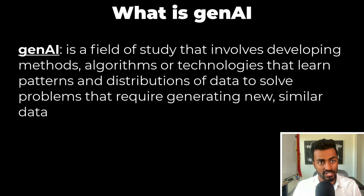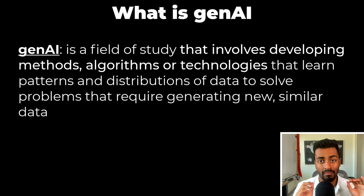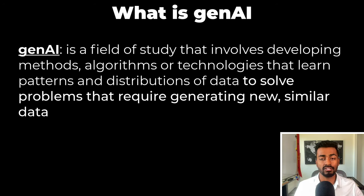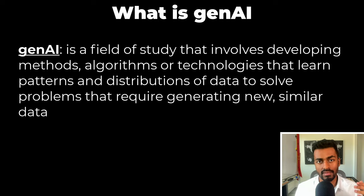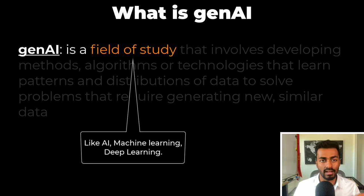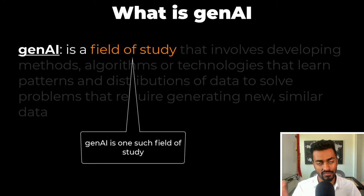Let's start with a definition. Gen AI is a field of study that involves developing methods, algorithms, or technologies that learn the patterns and distributions of data to solve problems that require generating new and similar data. There are a lot of terms here, so let's break each piece down. First, Gen AI is a field of study — like AI, machine learning, and deep learning, which are also all fields of study. Gen AI is one such field of study.